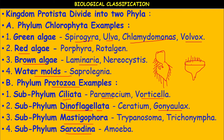Euglenoids occur in freshwater habitats and damp soils. Instead of a cell wall, they have a protein-rich layer called pellicle, which makes the body very flexible. Though they are photosynthetic in the presence of sunlight, when deprived of sunlight they behave like heterotrophs. Example: Euglena. Slime moulds and achlorophyllous saprophytic protists also show great diversity in nutrition.